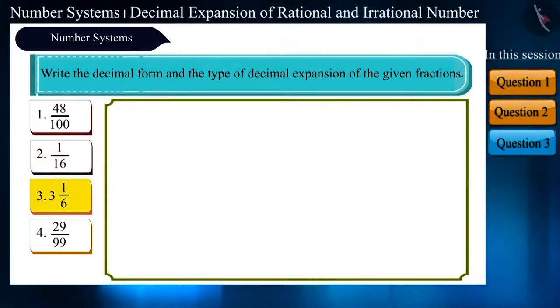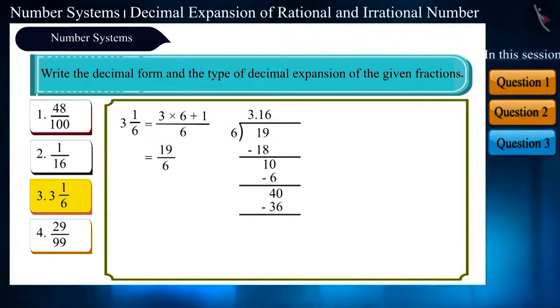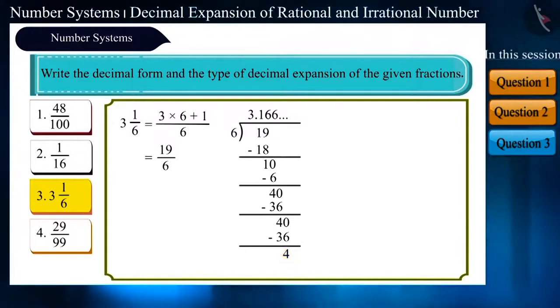Friends, the third fraction looks slightly different. It is 3 1 by 6. 6 multiplied by 3 plus 1 is equal to 19 by 6. On solving this, we do not get the remainder as 0. And after two steps, 6 is getting repeated. Hence, we get the decimal expansion as 3.16666. Therefore, this expansion is non-terminating, recurring.